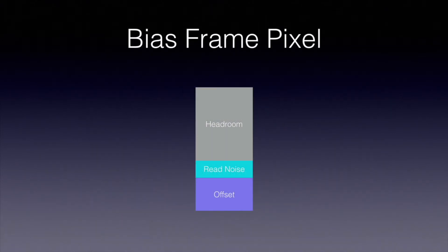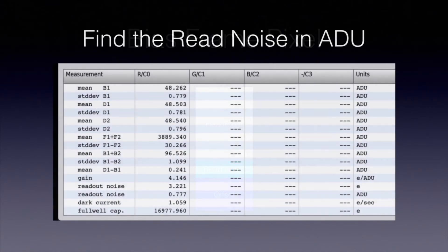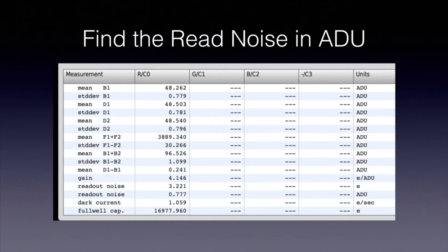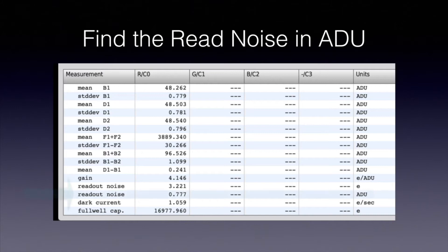We know that a bias frame is essentially made up of the offset plus the read noise. If we use the basic CCD parameter script, as we described in the last video, then we know both our read noise in electrons and our gain in electrons per ADU. If we divide that read noise by the gain, we get the read noise in ADU. It turns out the basic CCD parameter script does that math for us, so you can also grab the value directly from its output.